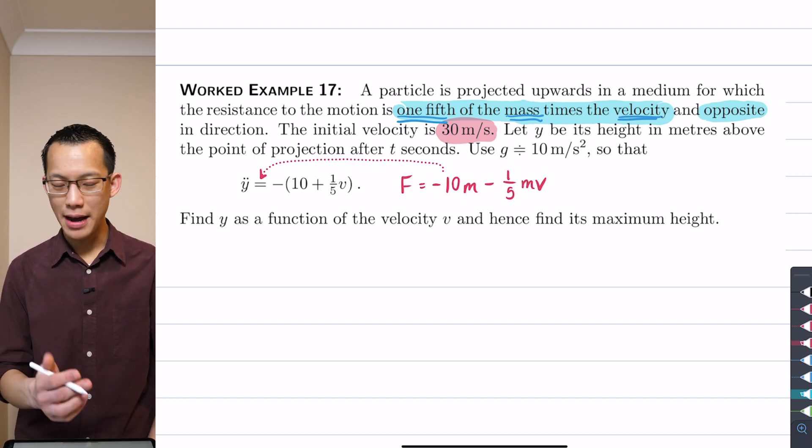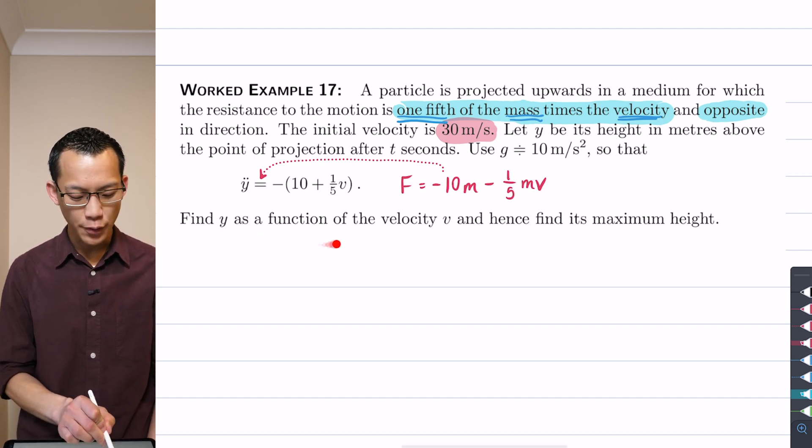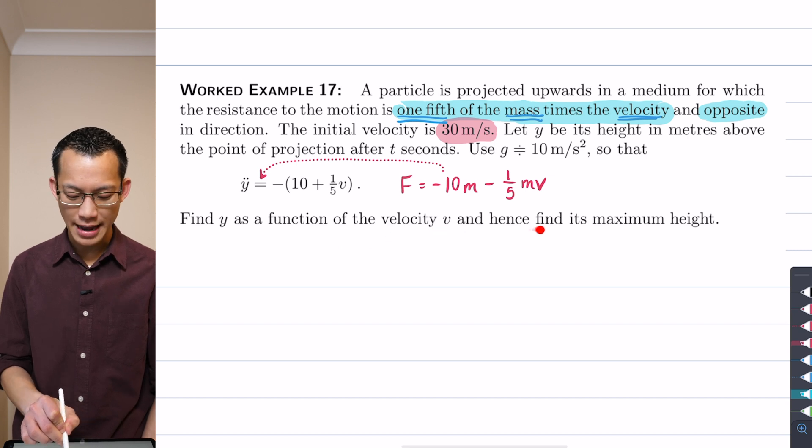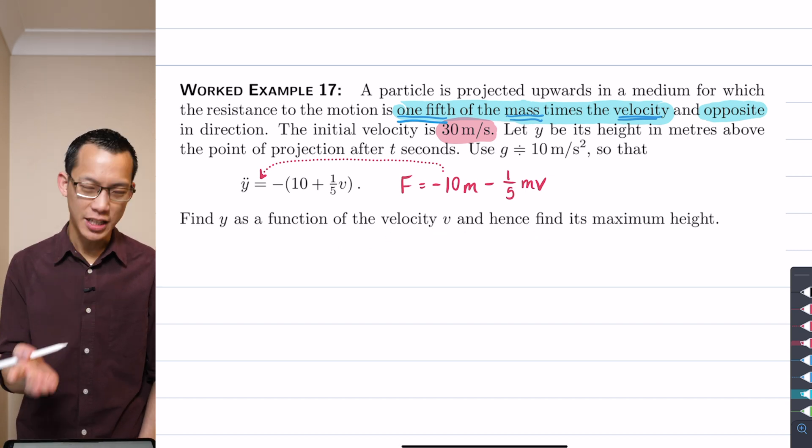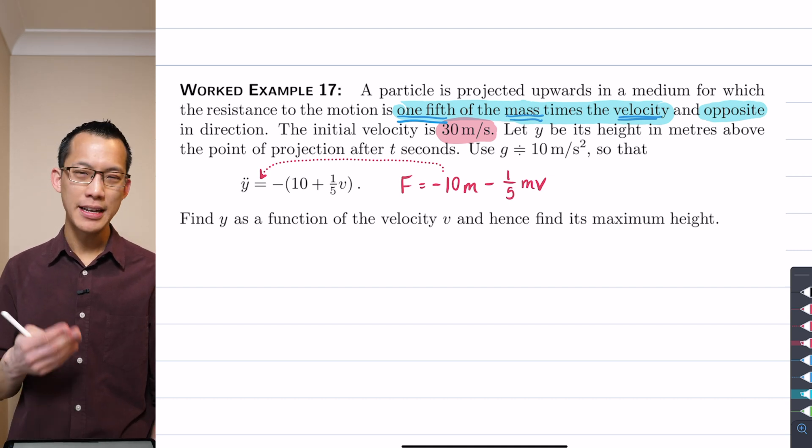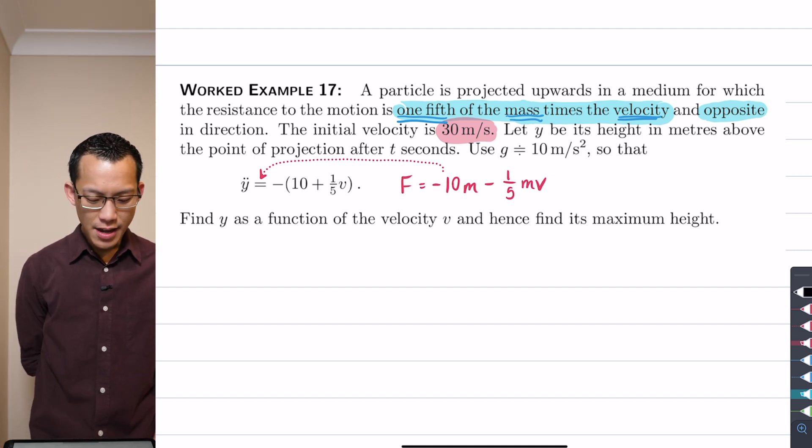Now what the question is, well the first part of the question is, find y as a function of the velocity v and hence find its maximum height. So that's a bit sneaky, it's kind of like a second part to this question, but it's fairly trivial.